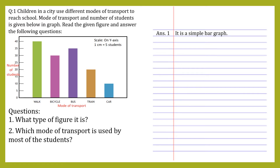Question number two: which mode of transport is used by most of the students? Just check which rectangle has the highest height. You can see the first rectangle with a green color having the highest height, corresponding to 40 students. So most of the students come to school by walking. The answer is: most of the students walk to school.